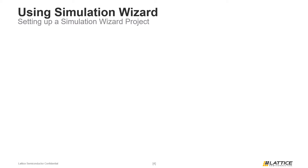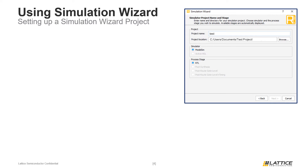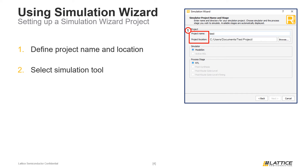The next page in the Simulation Wizard window, as seen in the figure on the screen, is where users define a name and location for their project using the project name and project location fields. Next, users should select the simulation tool they want to use via the Simulator option field. By default, only ModelSim will be available for selection, unless another simulation tool has been configured in Radiant options.